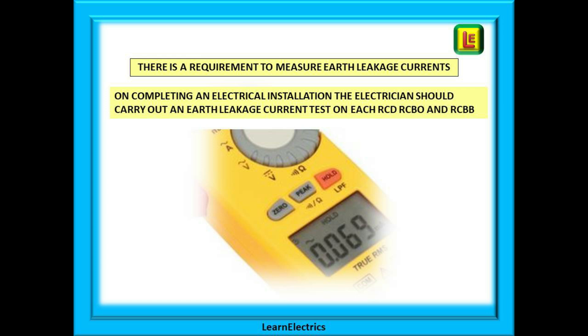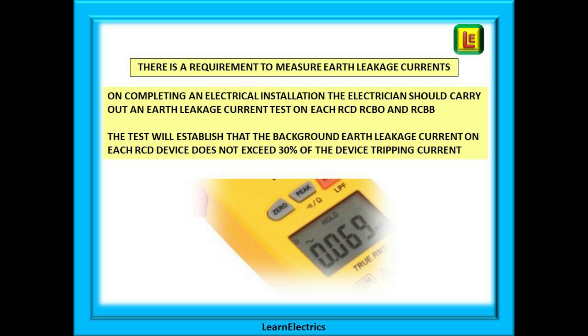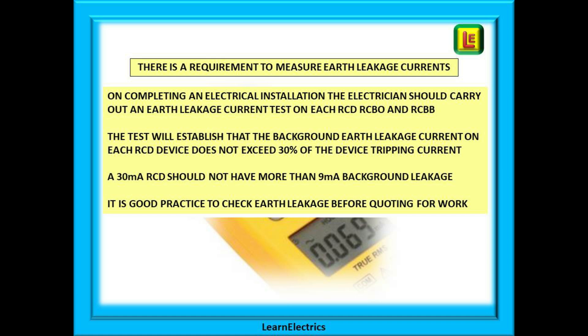The regulations suggest that in normal use leakage currents should not exceed 30% of the RCD operating current. There is a requirement to measure earth leakage currents on each RCD device when an electrical installation is completed. The test establishes if background earth leakage exceeds the 30% limit. It is a good idea to check leakage currents before quoting for work, especially if quoting for a consumer unit change from an older non-RCD type to a newer board with the latest RCDs fitted.